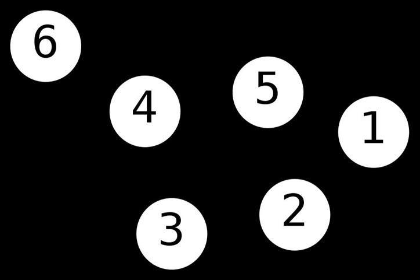A k-vertex-connected graph or k-edge-connected graph is a graph in which no set of k−1 vertices exists that, when removed, disconnects the graph. A k-vertex-connected graph is often called simply a k-connected graph.